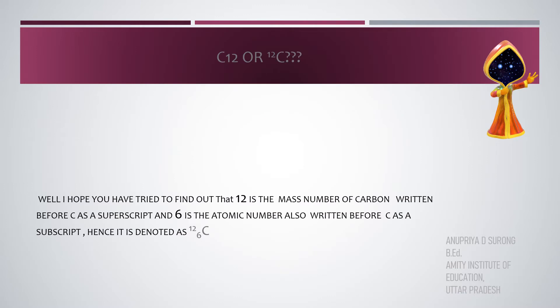Well, I hope you have tried to find out that 12 is the mass number of carbon written before C as a superscript. And 6 is the atomic number also written before C, but as a subscript.